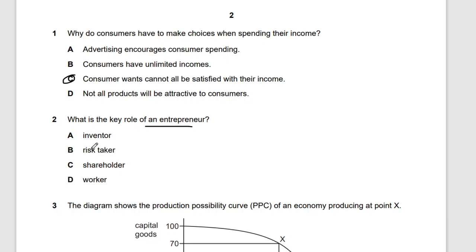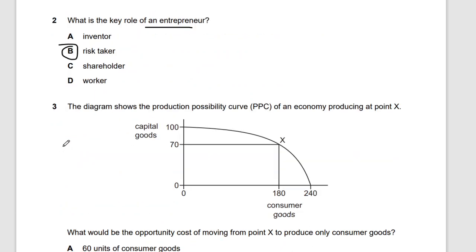Question two: what is the key role of an entrepreneur? The choices are inventor, risk taker, shareholder, or worker. The answer is A — risk taker. An entrepreneur's ideas should be innovative, but that doesn't mean he's an inventor. The key role is being a risk taker.